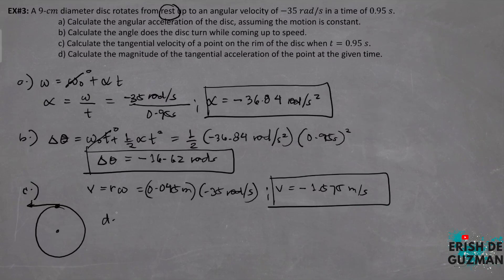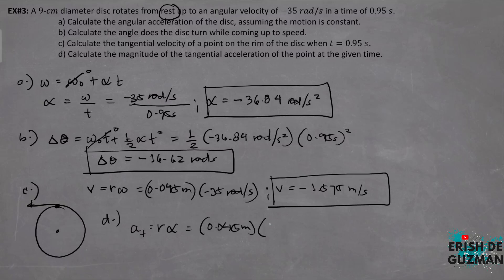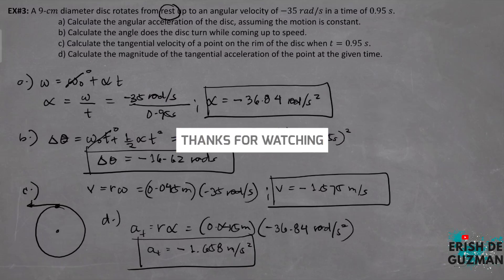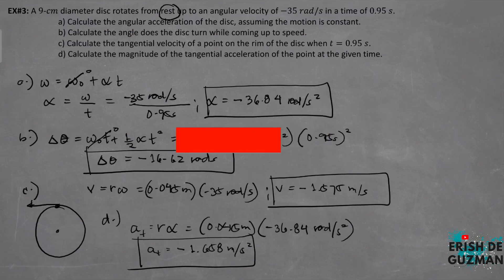For letter D, tangential acceleration equals radius times angular acceleration. Substituting the same radius, 0.045 meters, times the angular acceleration of negative 36.84 radians per second squared. Tangential acceleration is equal to negative 1.658 meters per second squared. Kung gusto natin i-convert letter B into revolutions, we use the factor 1 revolution equals 2 pi radians. Since negative siya, dapat nasa clockwise direction. So this is example number 3.